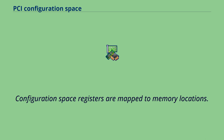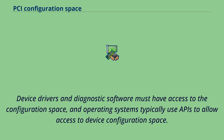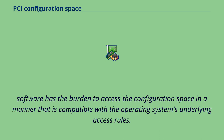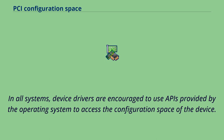Configuration space registers are mapped to memory locations. Device drivers and diagnostic software must have access to the configuration space, and operating systems typically use APIs to allow access to device configuration space. When the OS does not have APIs defined for memory-mapped configuration space requests, the driver or diagnostic software must access configuration space in a manner compatible with the OS's underlying access rules. In all systems, device drivers are encouraged to use APIs provided by the OS to access configuration space.